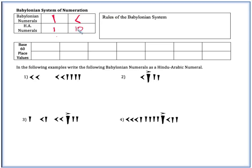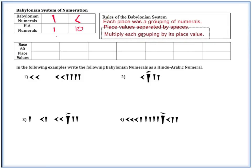Out of these they were able to make all of their numbers. The rules of the Babylonian system: each place value was a grouping of numerals, place values were separated by spaces, and we still have the same idea of multiplying each group by its place value. The Babylonian system of numeration is a base 60 system.